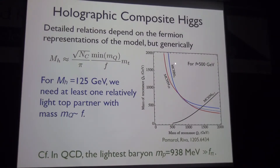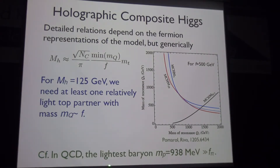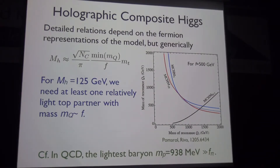Results from Pomarol and Vives show that for F around 500 GeV, at least one of the two types of heavy resonances is always very light, around 500 GeV, similar to F. This is quite different from QCD, where the lightest composite fermions like baryons have masses much larger than F_pi. This requires a special arrangement: the composite operator needs a scaling dimension very close to 3/2, meaning it almost decouples from the strong dynamics — an unusual requirement.